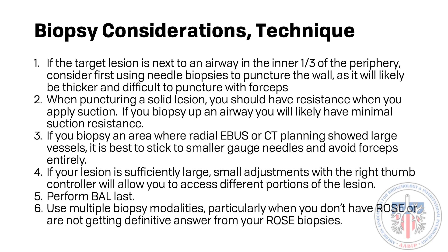Bronchoalveolar lavage can also be accomplished through the Monarch robot. Detach the luer lock suction from the scope and attach a 30 or 60 milliliter luer lock syringe with sterile saline. Flush the saline into the scope and then apply suction while slowly withdrawing the scope. Keep in mind that very little lavage fluid tends to return. To minimize radiographic changes, you should always perform bronchoalveolar lavage last.